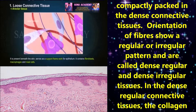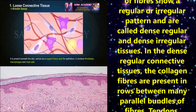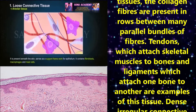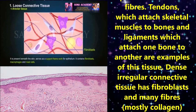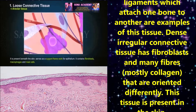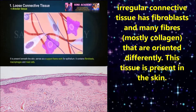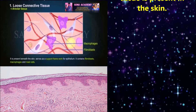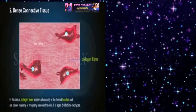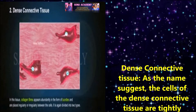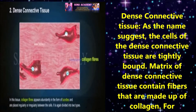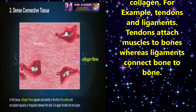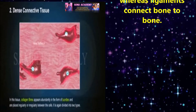Fibers and fibroblasts are compactly packed in dense connective tissue. The orientation of fibers shows a regular or irregular pattern, giving rise to dense regular and dense irregular tissue. In dense regular connective tissue, collagen fibers are present in rows, mainly as parallel bundles. Tendons, which attach skeletal muscles to bones, and ligaments, which attach one bone to another, are examples of this tissue. Dense irregular connective tissue has fibroblasts and many collagen fibers oriented differently, and this tissue is present in the skin.